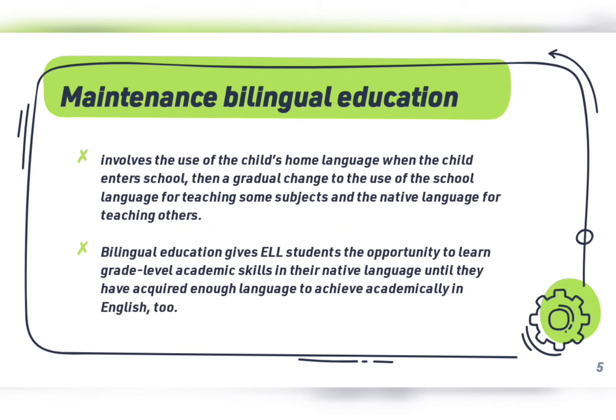Next is maintenance bilingual education. Maintenance bilingual education involves the use of the child's home language when the child enters school, then a gradual change to the use of the school language for teaching some subjects and the native language for teaching others. Bilingual education gives ELL students the opportunity to learn grade-level academic skills in their native language until they have acquired enough language to achieve academically in English too.